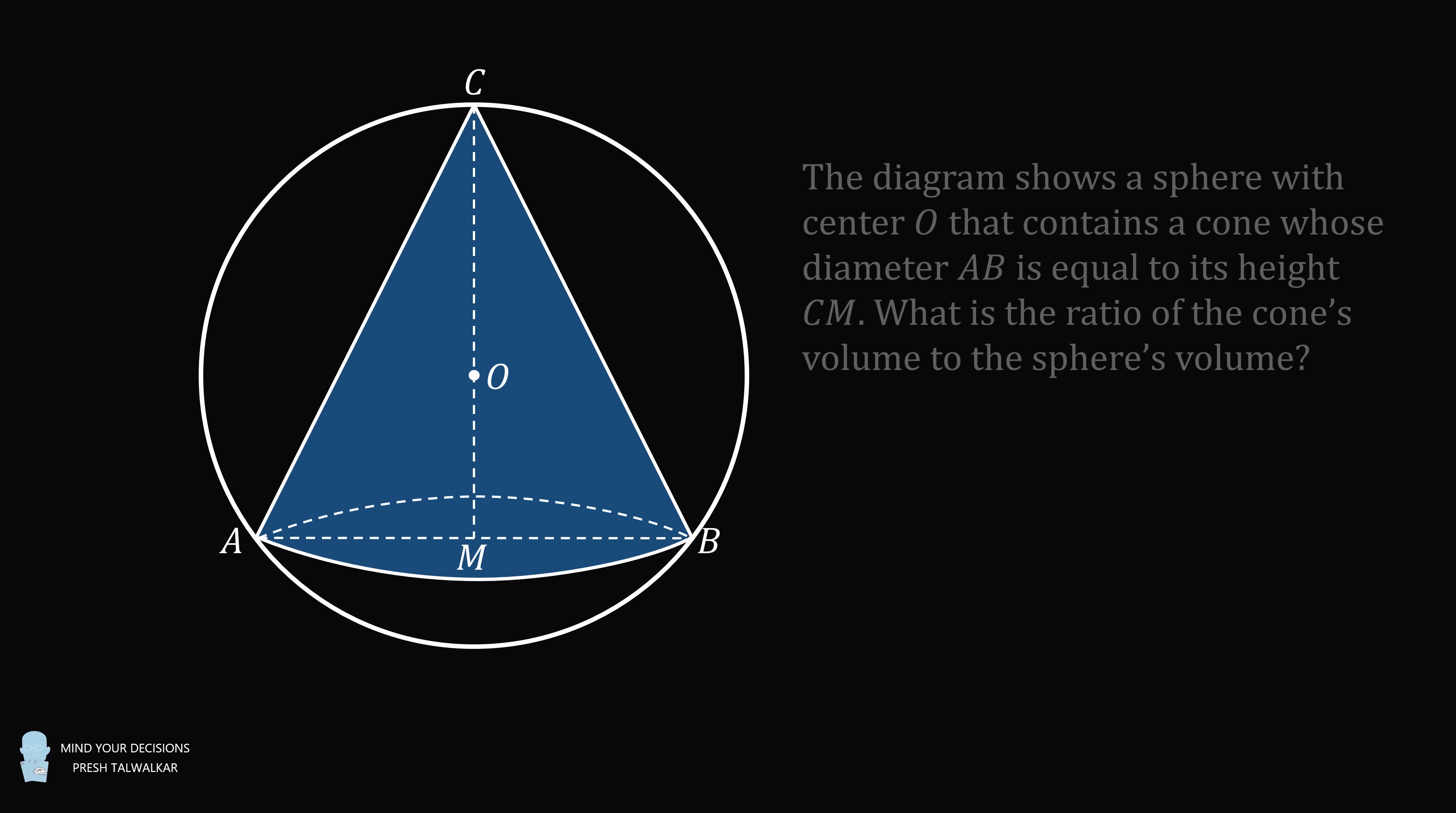Hey, this is Presh Talwalker. The diagram shows a sphere with center O that contains a cone whose diameter AB is equal to its height CM.